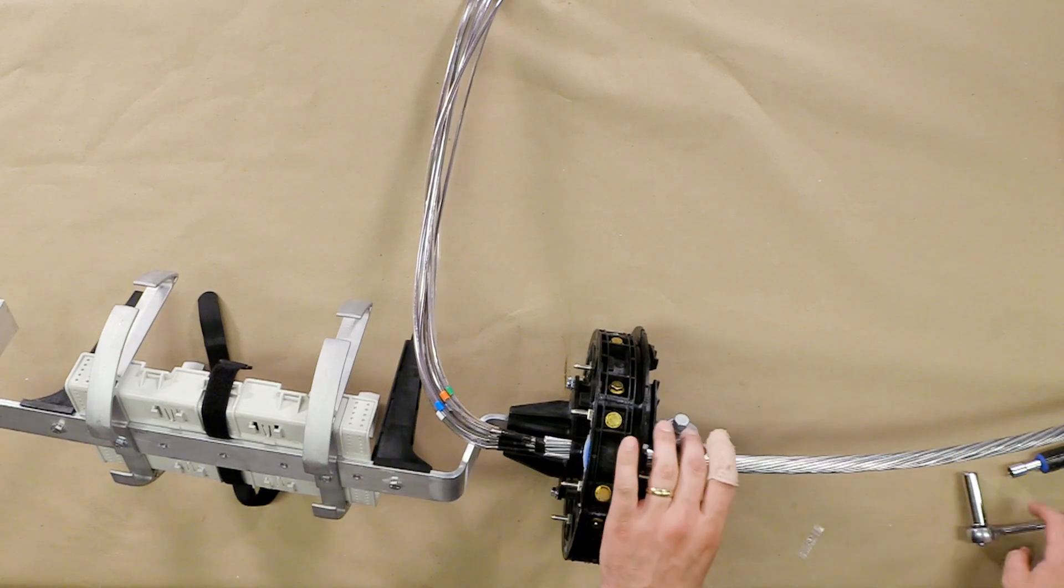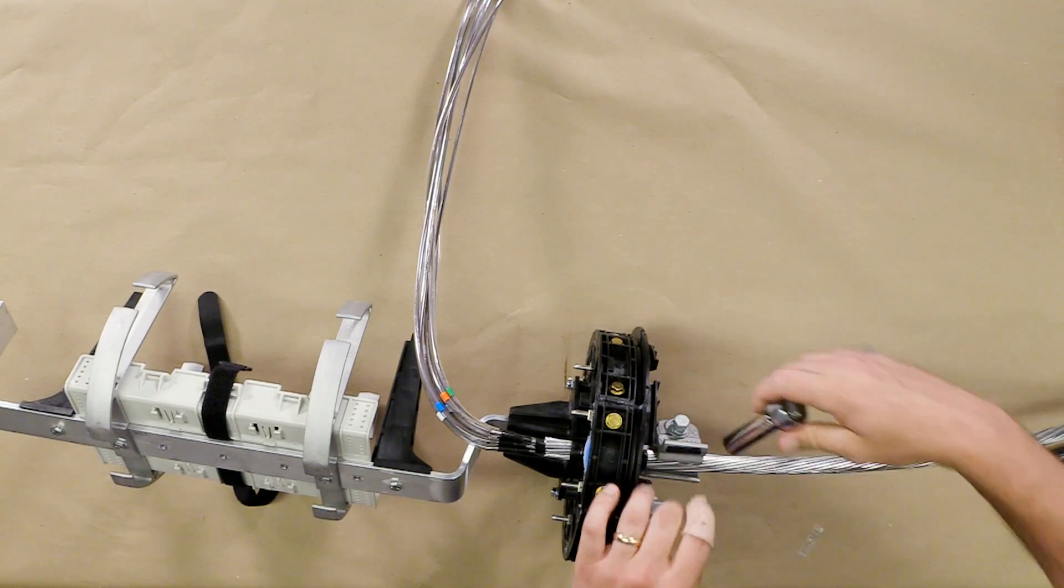Using a torque wrench, tighten down the keeper on the OPGW cable to 25 foot-pounds.